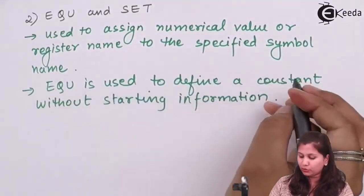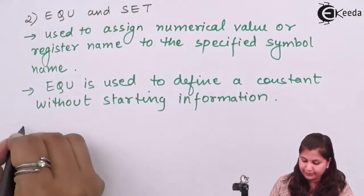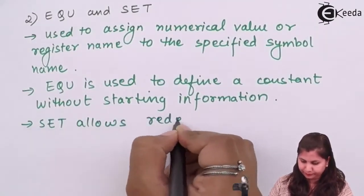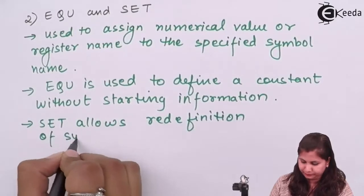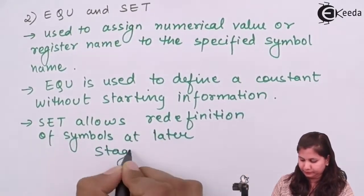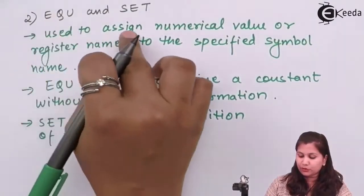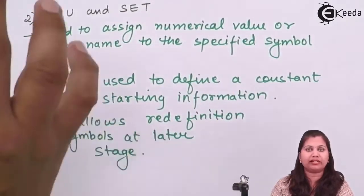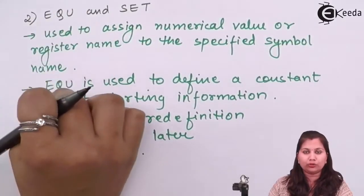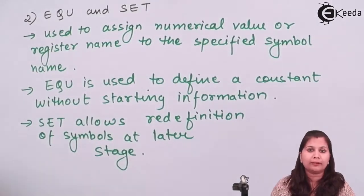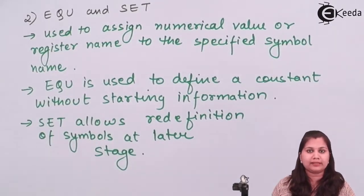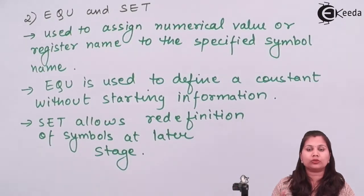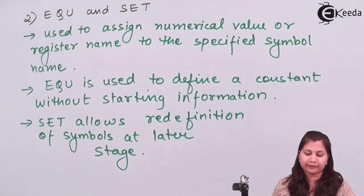EQU is used to define a constant and SET is used to define a symbol. When we use EQU, we cannot redefine that constant in the main program — once it is assigned, it remains the same throughout the whole program. Whereas with SET, since we are assigning a symbol, it can be changed or redefined in the program.